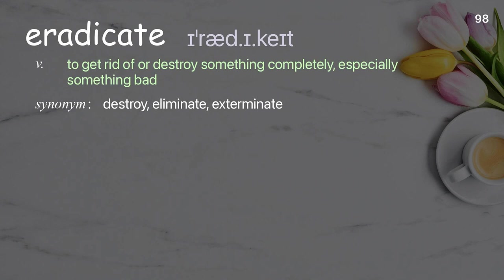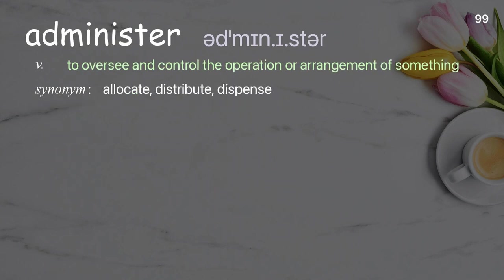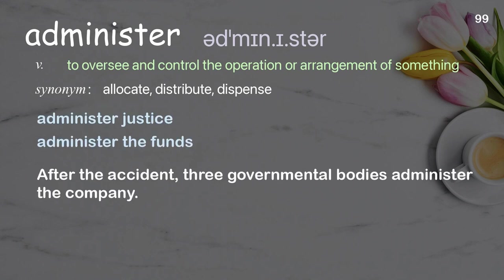Eradicate: to get rid of or destroy something completely, especially something bad. Examples: eradicate the deficit, eradicate racial discrimination. We are trying to eradicate this disease from the world. Administer: to oversee and control the operation or arrangement of something. Examples: administer the funds. After the accident, three governmental bodies administer the company.